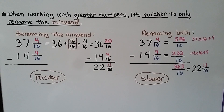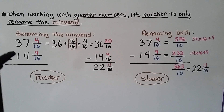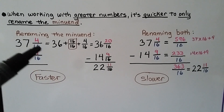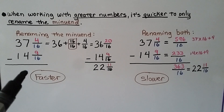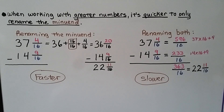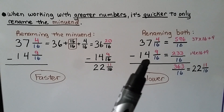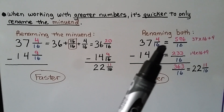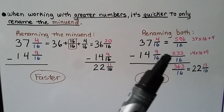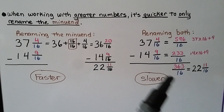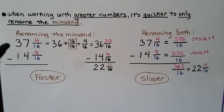When working with greater numbers, it's quicker to only rename the minuend. We have 37 and 4 sixteenths minus 14 and 9 sixteenths. These numbers are so large, it's quicker to write 37 as 36 plus 16 sixteenths, using 16 because that's the denominator, then adding the 4 sixteenths to get 36 and 20 sixteenths, and then subtract 14 and 9 sixteenths to get 22 and 11 sixteenths. If we tried renaming both, we'd have to multiply 37 times 16 and add 4 to get 596 over 16, and 14 times 16 plus 9 to get 233 over 16 — these numbers are too large. It's much quicker to just rename the minuend.